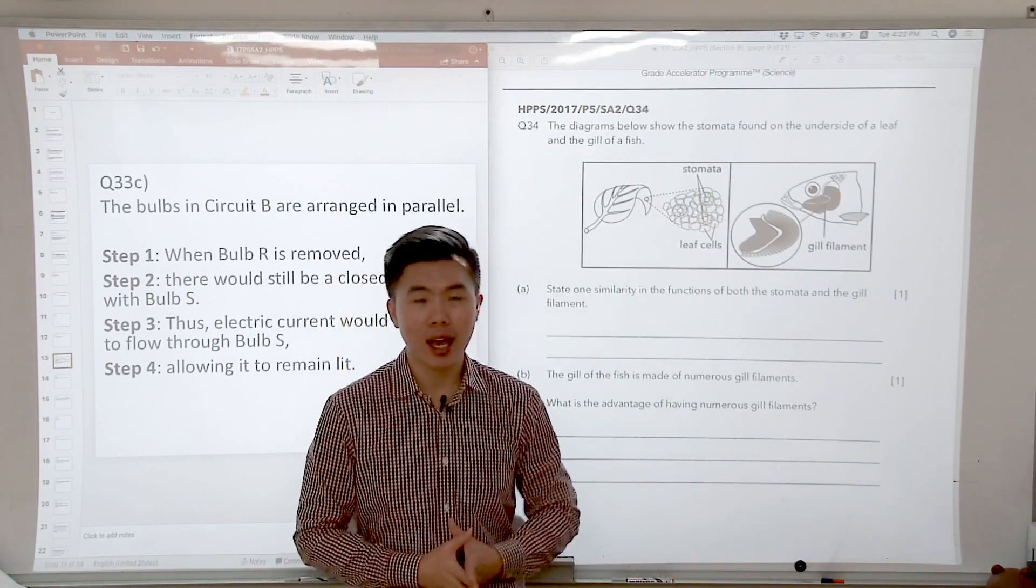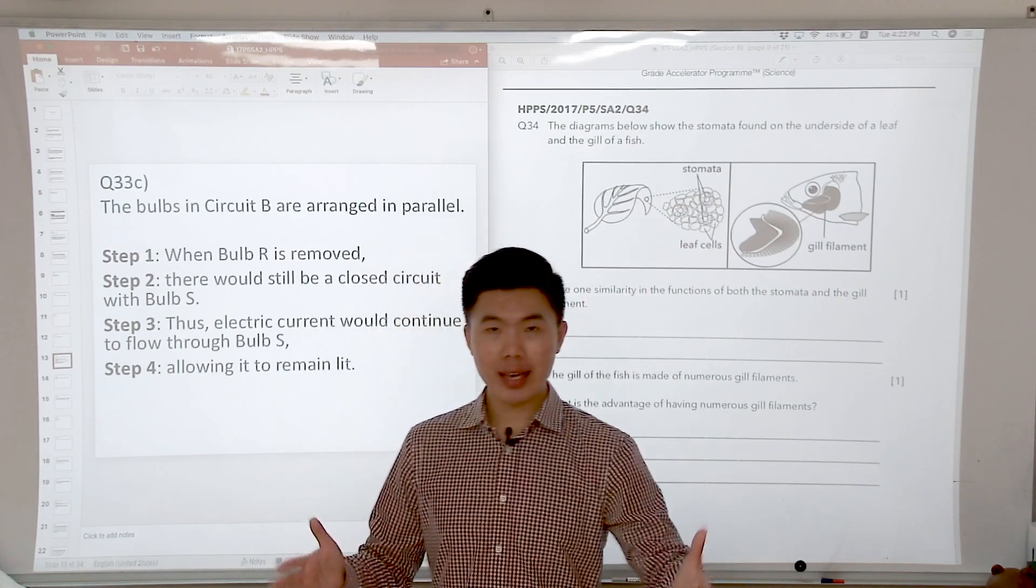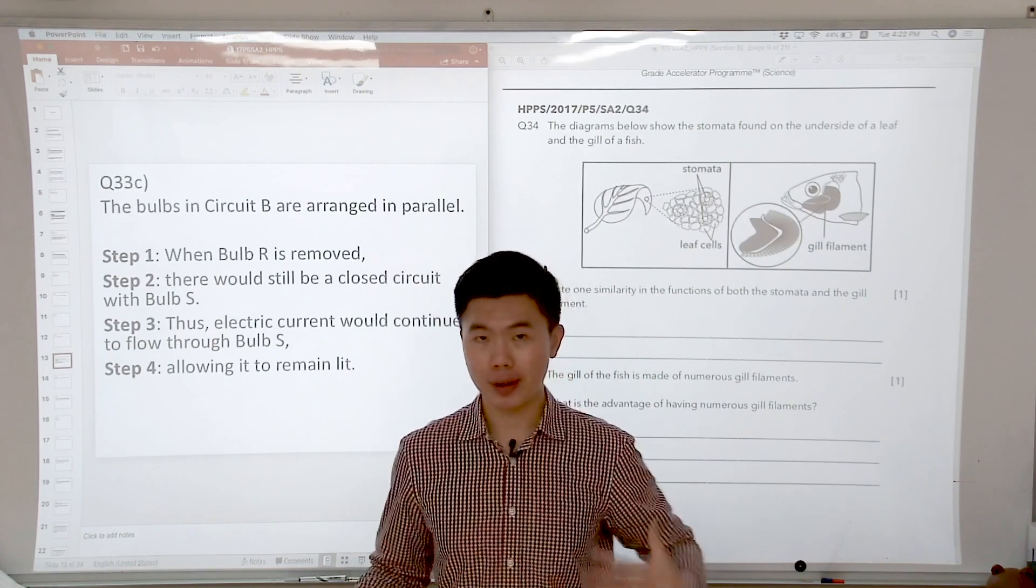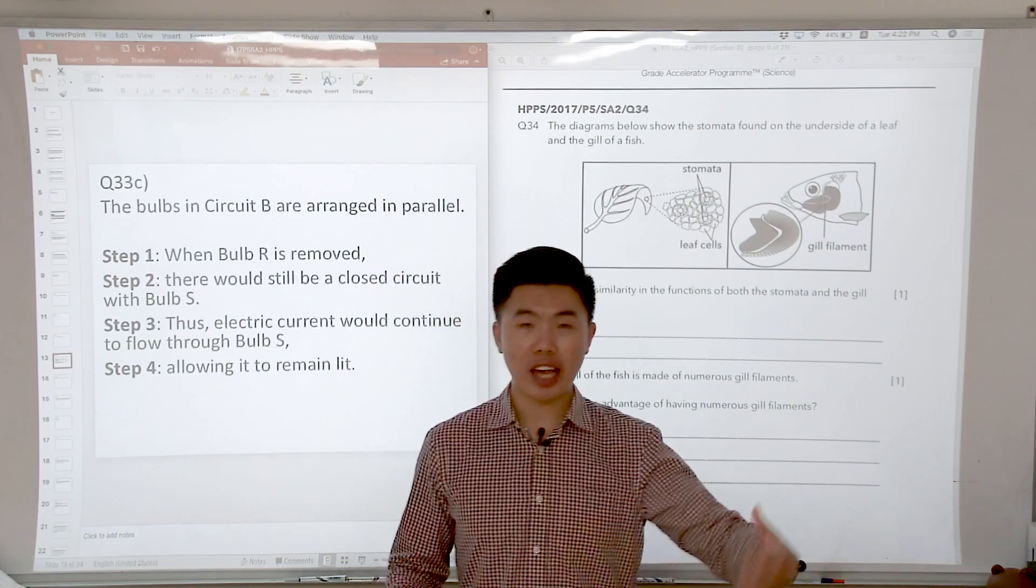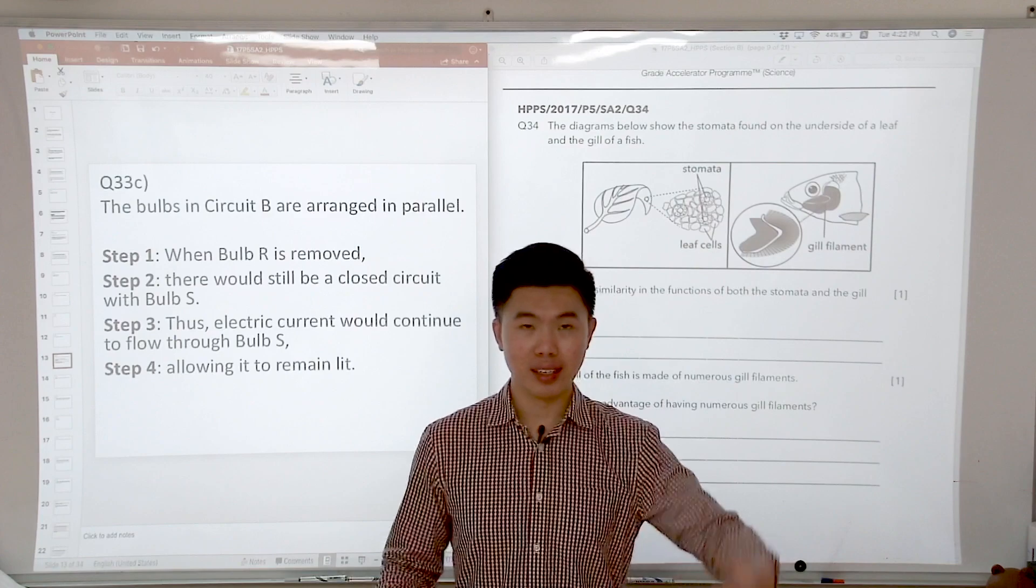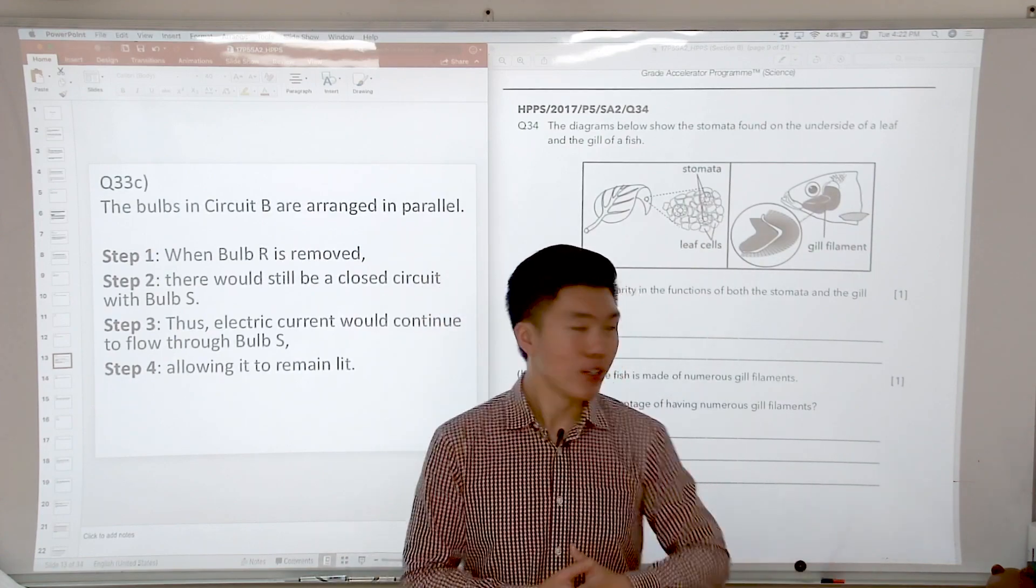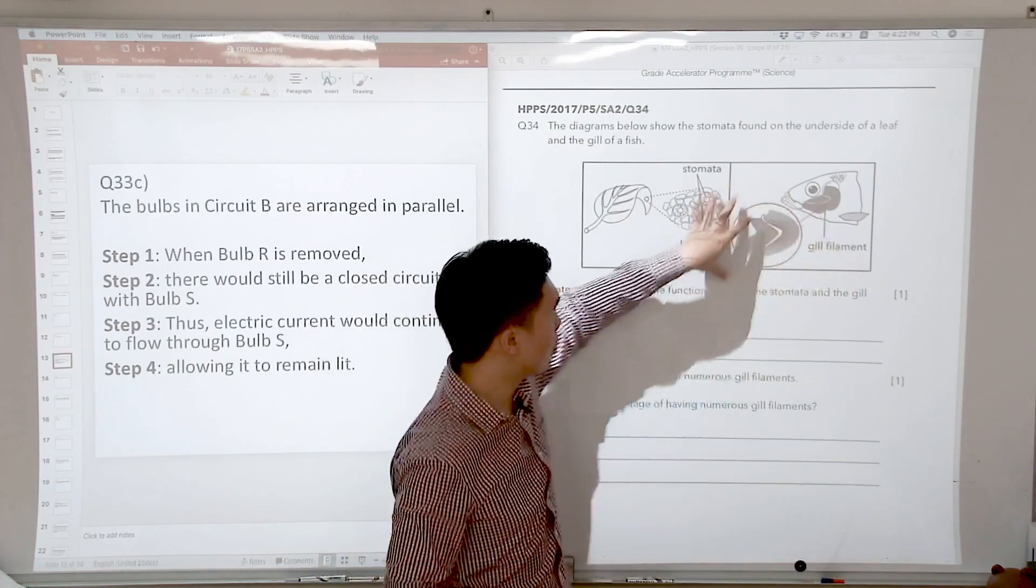Now let's discuss the gill filament. The gill filament is similar to what we learn about ourselves, which is the lungs. The lungs allow for the exchange of gases. The gills allow for the exchange of gases as well. So how does having all these gill filaments help?